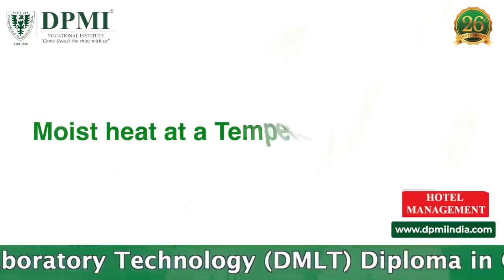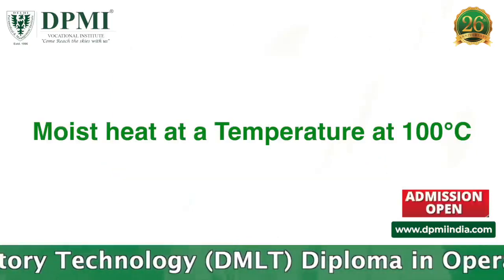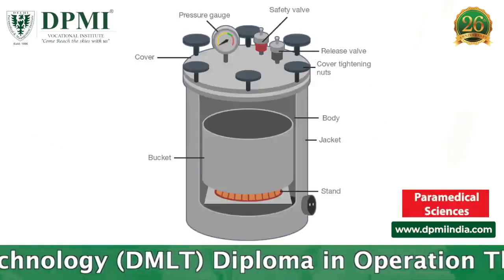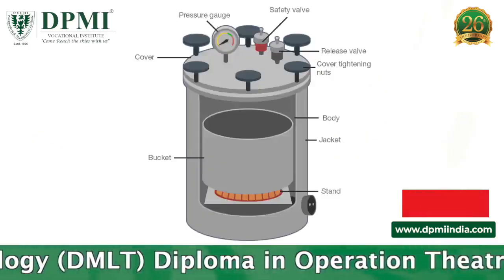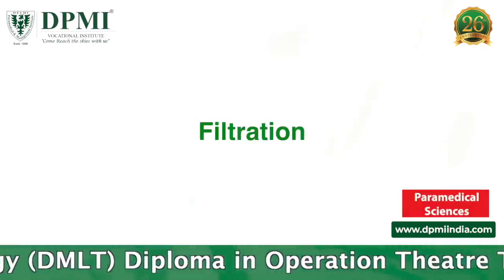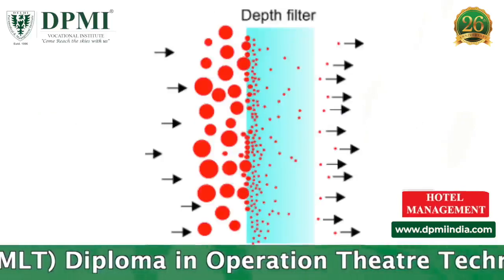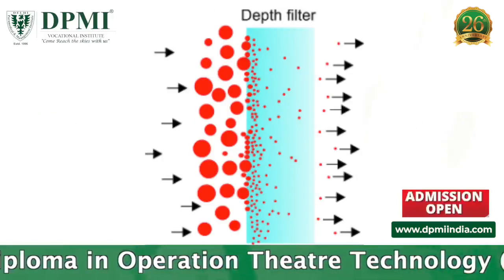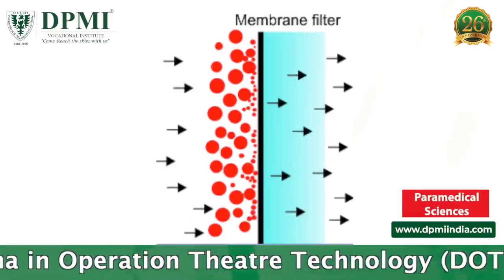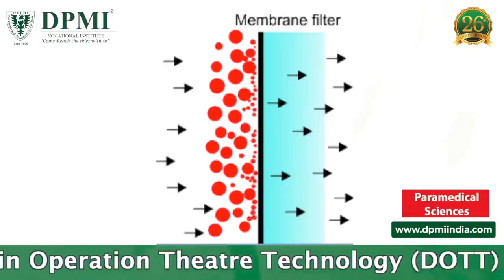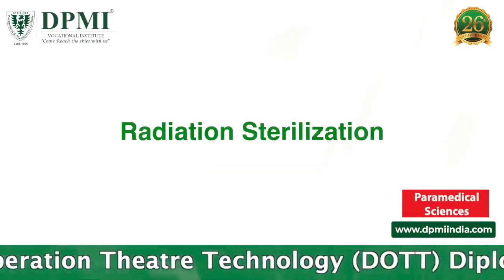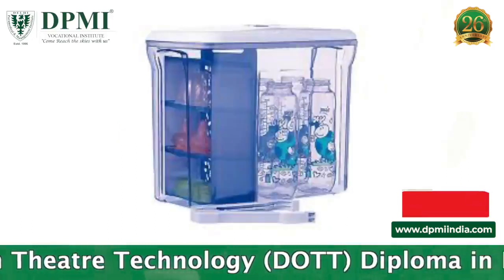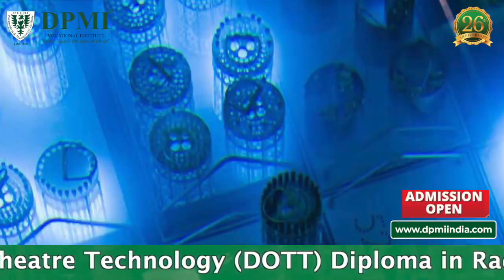Moist Heat Sterilization above 100 degrees centigrade includes the Autoclave. Filtration types used are Depth Filters and Membrane Filters. Radiation Sterilization, also called cold sterilization, includes ionizing and non-ionizing radiation.